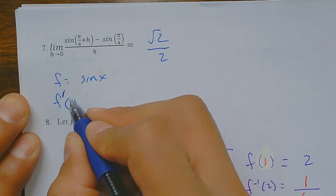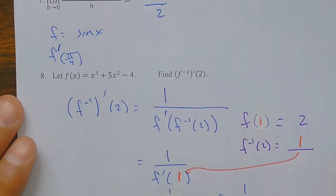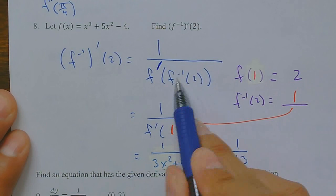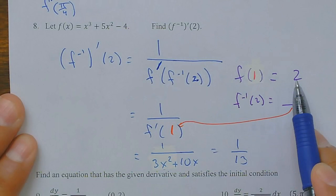Number eight is another derivative of the inverse. The setup is again: one over the derivative of the original evaluated at the inverse at 2. To evaluate the inverse at 2, I find when the function equals 2 — that's at x equals 1. So I plug 1 into my derivative, giving one over 13.